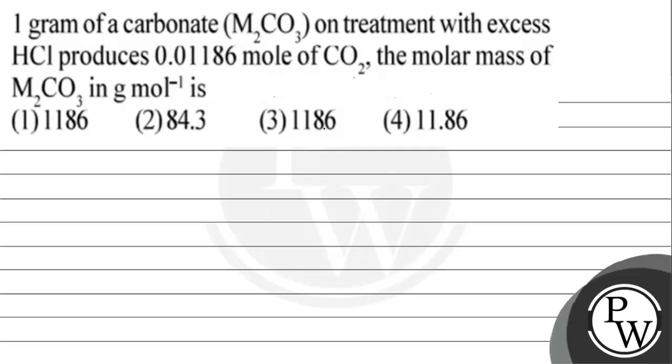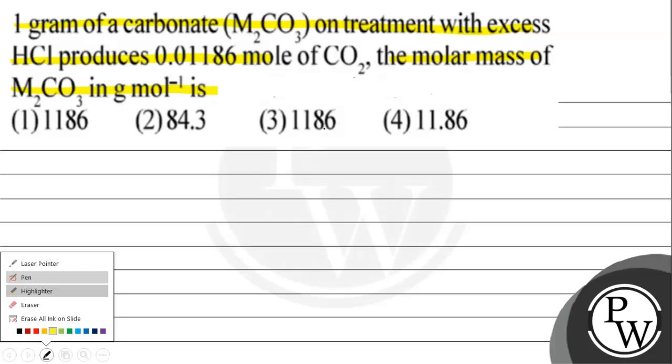Hello, let's read this question. The question says: one gram of a carbonate M₂CO₃ on treatment with excess HCl produces 0.01186 moles of carbon dioxide. The molar mass of M₂CO₃ in grams per mole is: option 1, 1186; option 2, 84.3; option 3, 1186; option 4, 11.86.